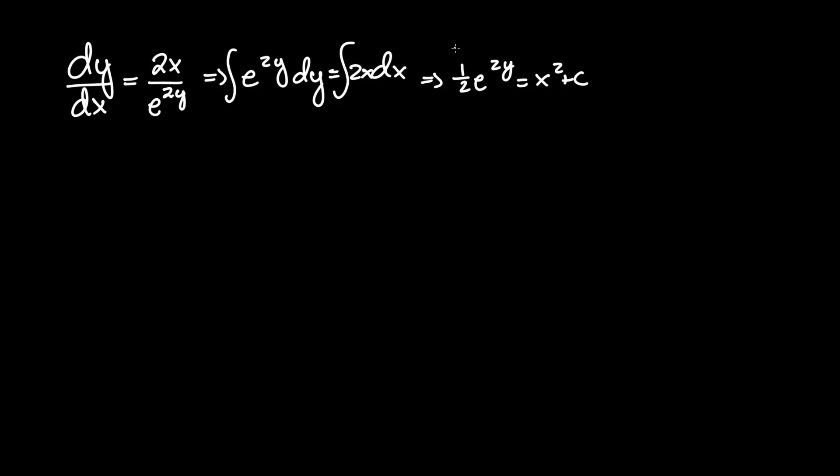To isolate for y we can multiply both sides by 2 which will give us e to the 2y equals 2x squared plus c. Since 2 is a constant, c can just absorb that.